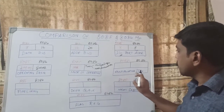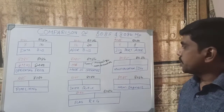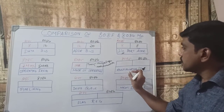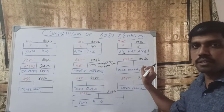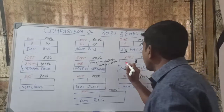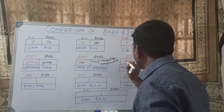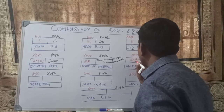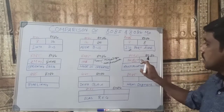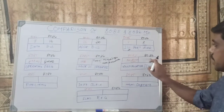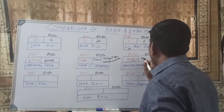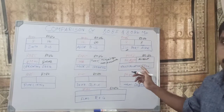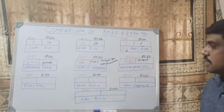The next property is multiplication and division function. In the 8085 microprocessor, there is no direct instruction for performing multiplication and division. But in the 8086 microprocessor, we have direct instructions for performing multiplication and division functions.